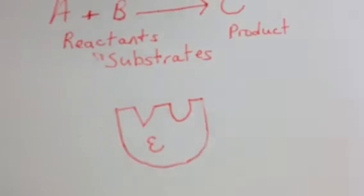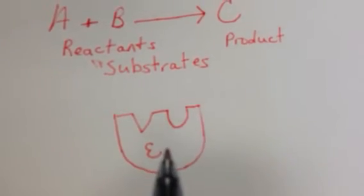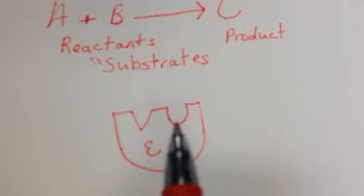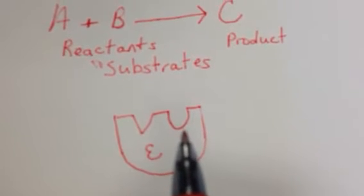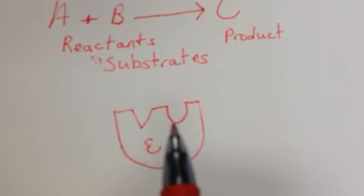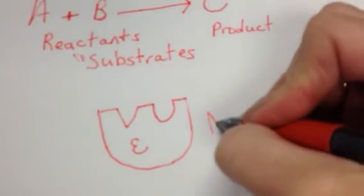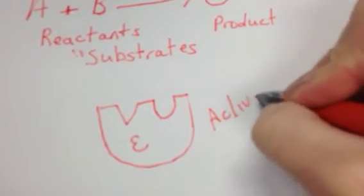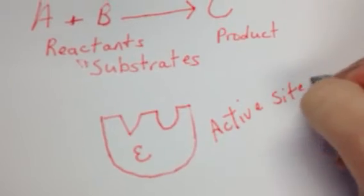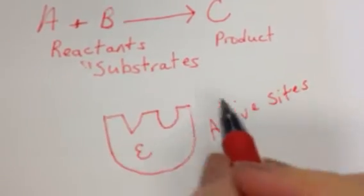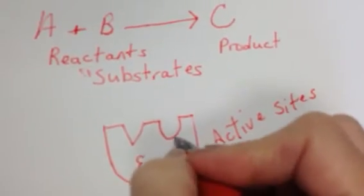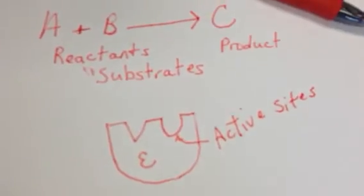And enzymes are made of protein, so they have a very particular shape. And what you see here, these depressions on the surface of this enzyme that I've drawn, these are actually called active sites. And it's the active sites that our substrates will bind. They will bind to these active sites.